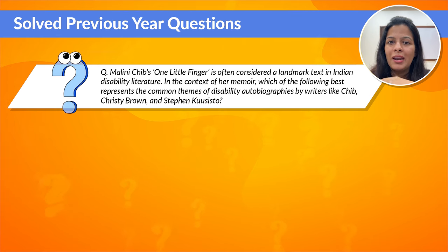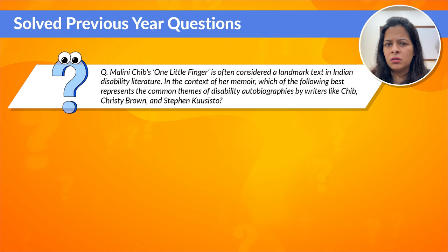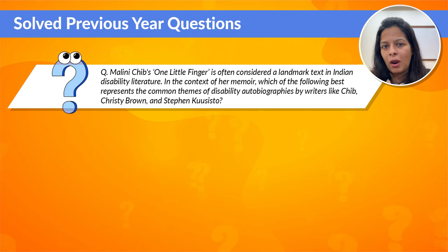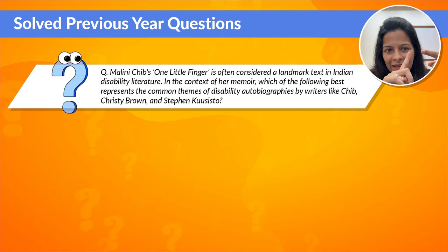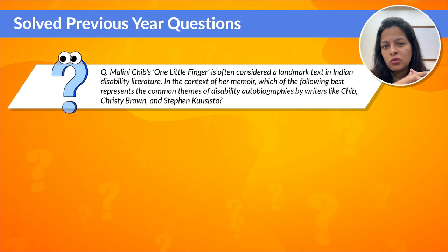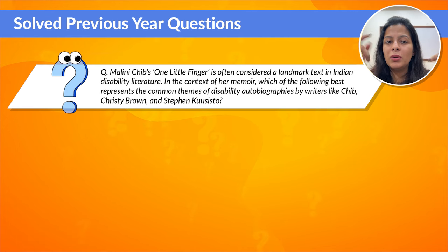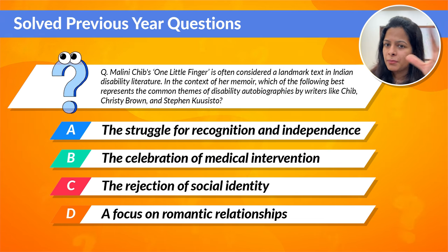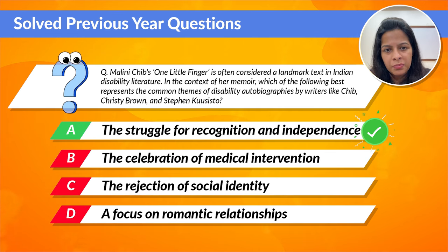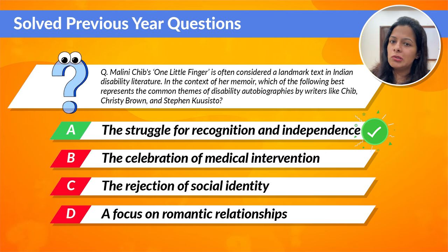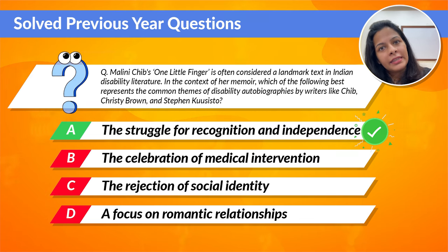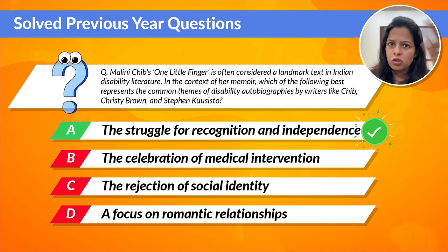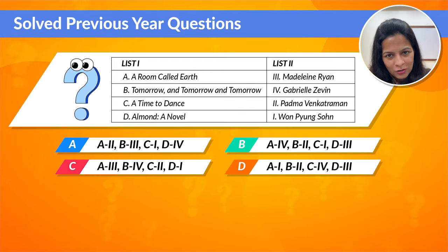The next question refers to Malini Chep's 'One Little Finger.' It asks about the common theme in similar autobiographies by writers like Christy Brown who wrote 'My Left Foot,' and Stephen Kuusisto who wrote 'Planet of the Blind.' The common theme across all these works is that the authors share their personal journey of overcoming not only physical challenges but also societal barriers, striving to be seen as individuals with their own identity and capabilities rather than being defined by their disability.